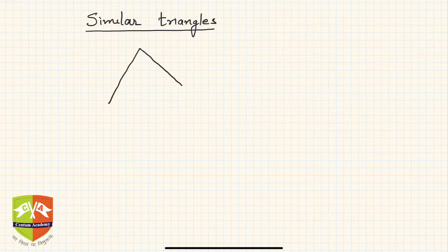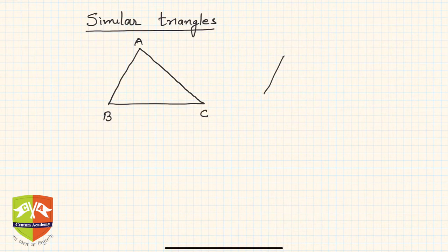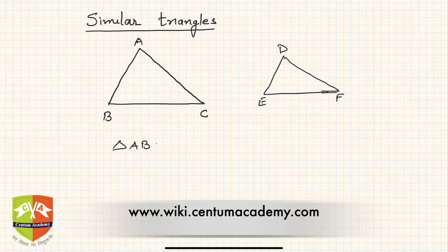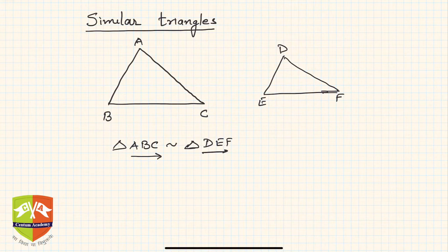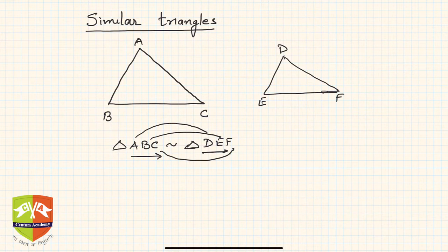Let us start with the concept of similar triangles. Say we have two triangles: triangle ABC and another triangle DEF. We say triangle ABC is similar to triangle DEF. The order in which you write the vertices is very, very critical — you cannot change the order. You must ensure the correspondence is true: A corresponds to D, B corresponds to E, and C corresponds to F.